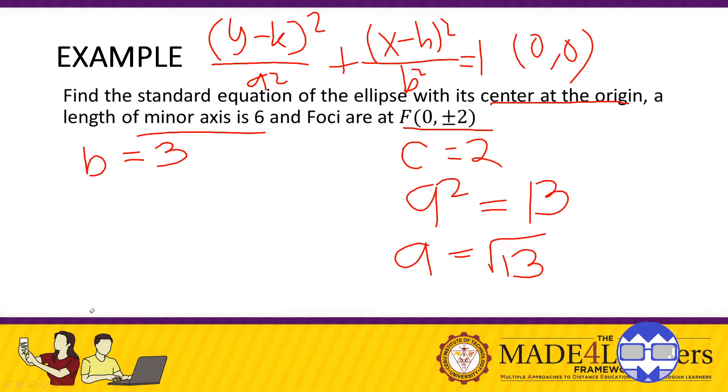Okay, so using this standard form, vertical. Using the vertical standard form of the ellipse. So we have, our K is 0, so we have Y squared. All over, A squared is, A squared would be, the square root of the square root of 13 is just 13.